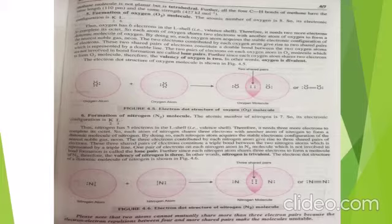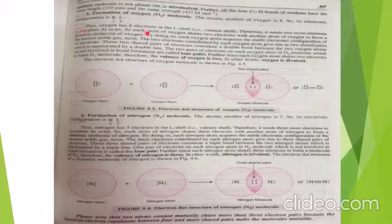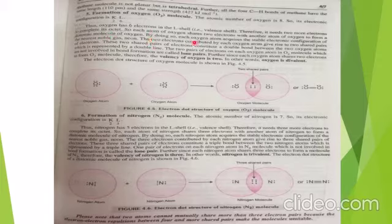The atomic number of oxygen is 8, so its electronic configuration is 2, 6. Thus oxygen has six electrons in its L shell, which is the valence shell. Therefore it needs two more electrons to complete its octet. So each atom of oxygen shares two electrons with the other oxygen atom to form a diatomic molecule of oxygen.